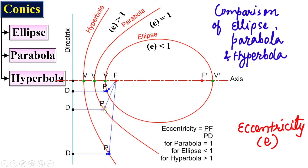For the parabola, PF upon PD: in case of parabola, PF and PD are always equal, and that is why in case of parabola eccentricity is always equal to 1. I think you can understand from this figure the concept of eccentricity and the comparison of these three different engineering curves in the conics group.